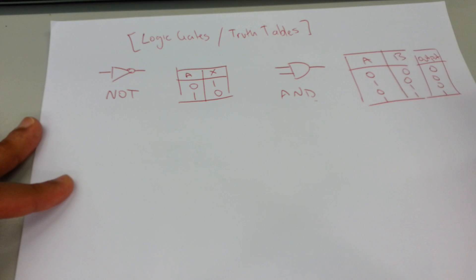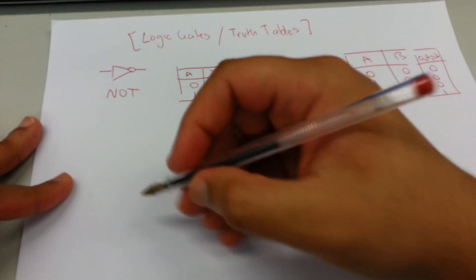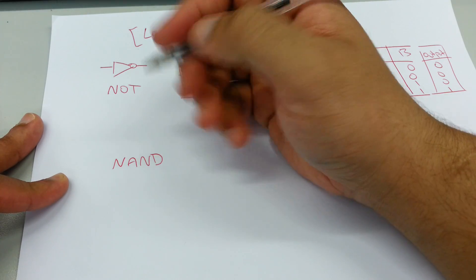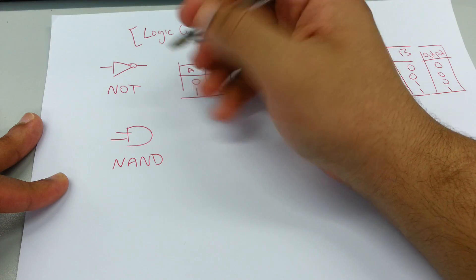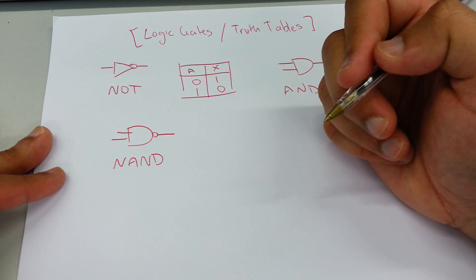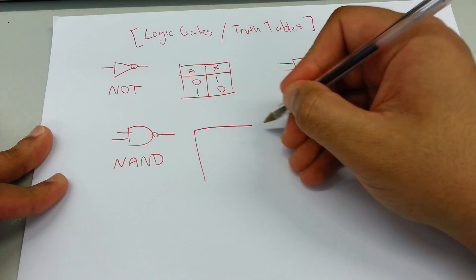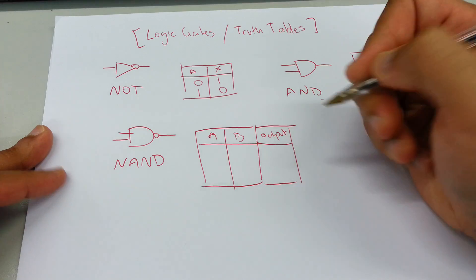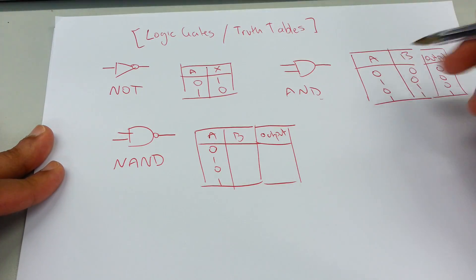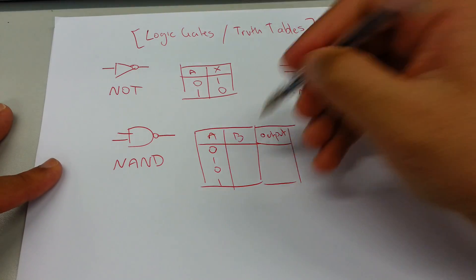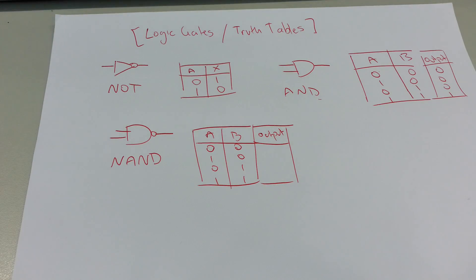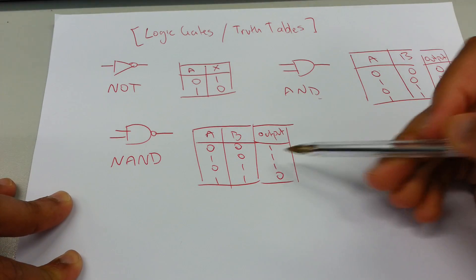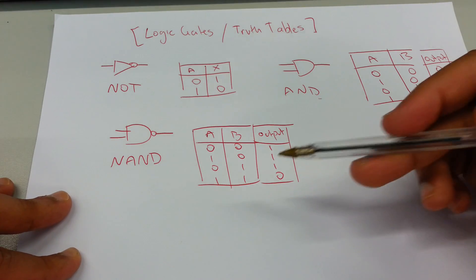The next one is the NAND gate, which is just the opposite of AND. The inputs are the same: 0, 1, 0, 1 and 0, 0, 1, 1. But the output differs — it's all the opposite of AND, so: 1, 1, 1, 0. If you know AND then you know the opposite of AND, which is NAND.